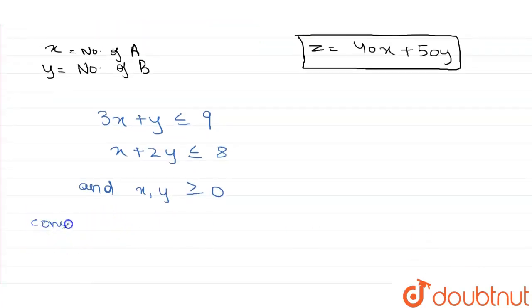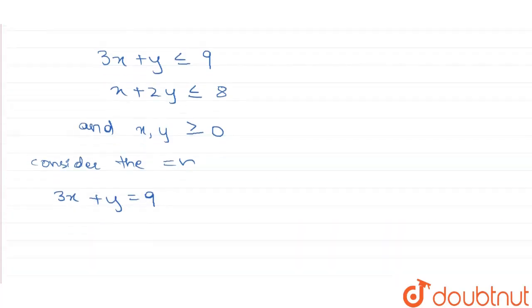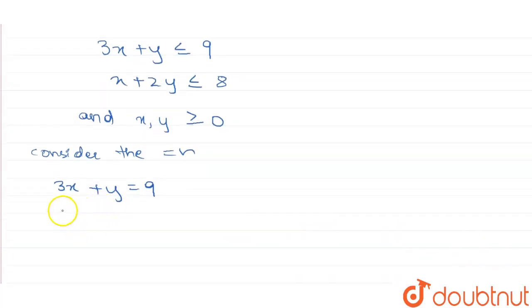Now consider the equation we got: 3x plus y equal to 9, where x equal to 3 and y equal to 0.